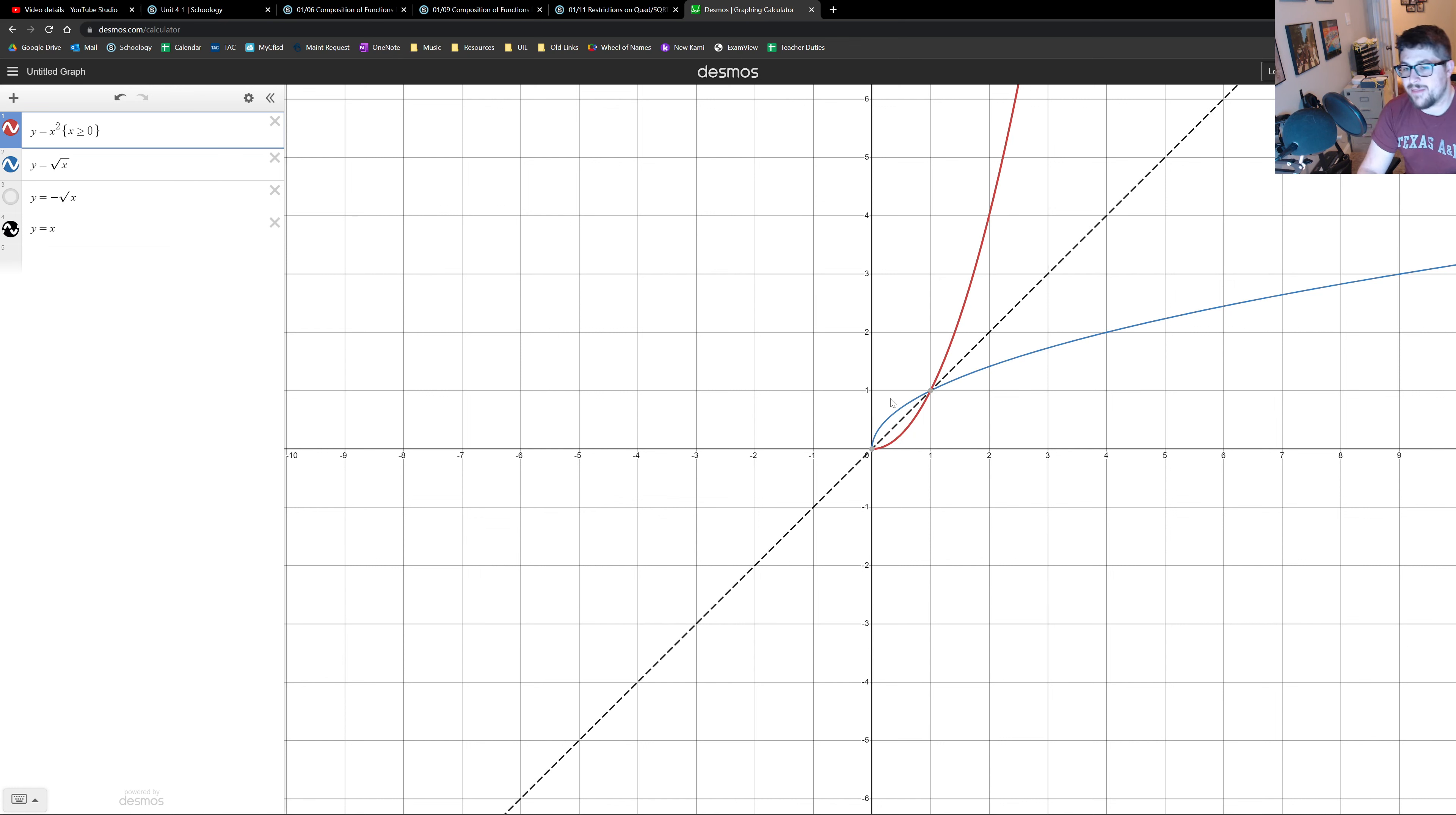And if I put my dash line back everything is symmetrical now along this line which is what we want. So really what we're doing here is we're just going to take whatever our quadratic is and just split it at the vertex and split it to the positive side so limit it to the positive side so here my limit was x is greater than or equal to zero.